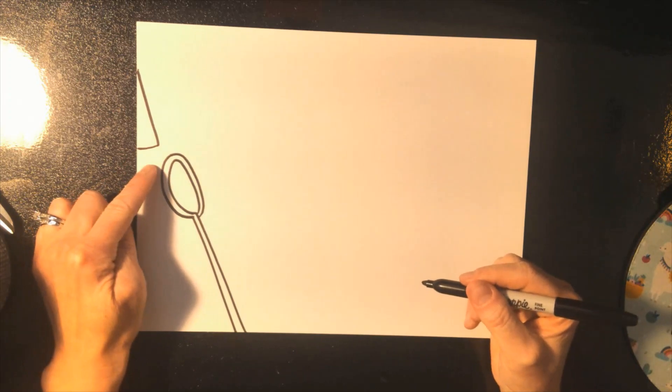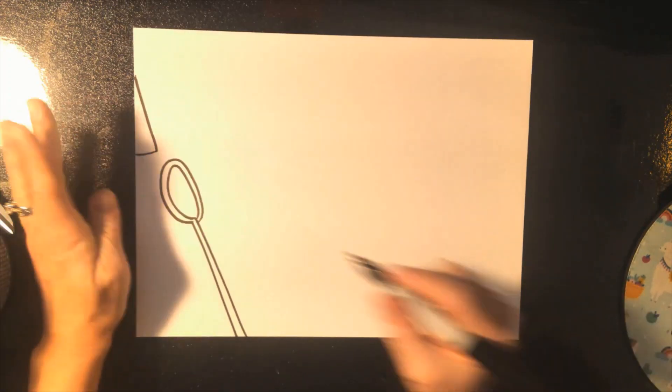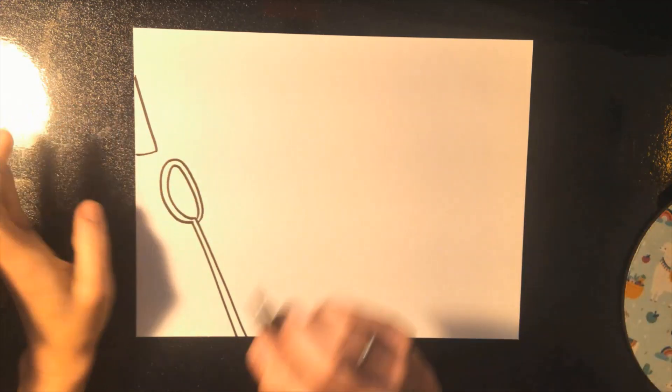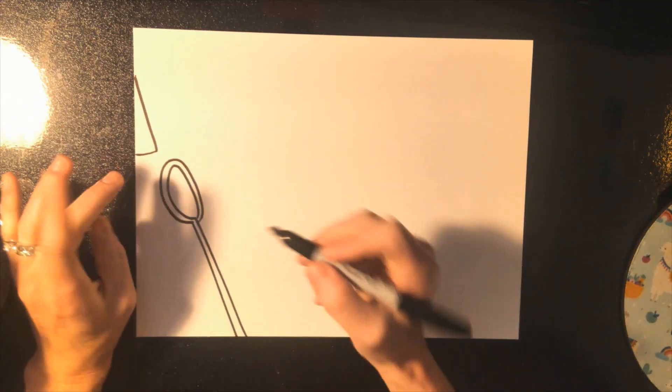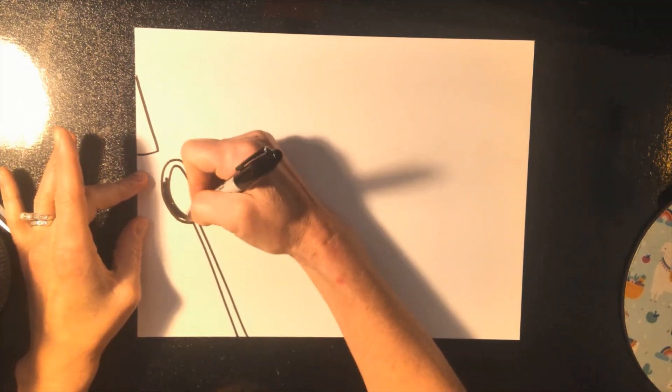Now you have the option of going and coloring this any colors you want. You could do a rainbow, you could do stripes, you can color it all in black. For this video, I'm just going to color it in black, but you can always do whatever you want.